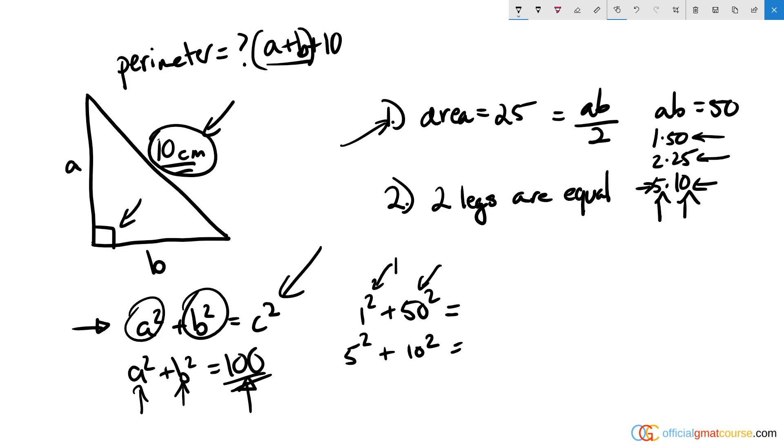But as we see here, this is equal to 1, and this is equal to 25 with two zeros on the end, so I get 2501. In the other situation, 5² is 25 plus 100, which equals 125.